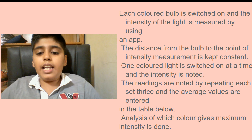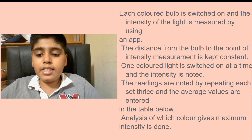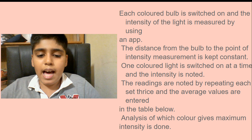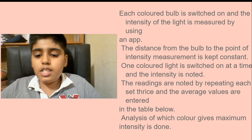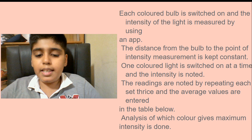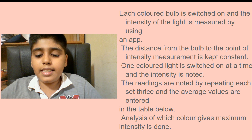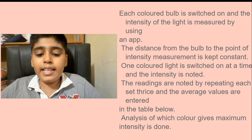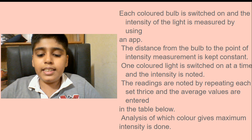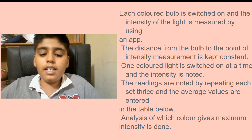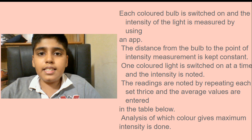Each colored bulb is switched on and the intensity of the light is measured using an app. The distance from the bulb to the point of intensity measurement is kept constant. One colored light is switched on at a time and the intensity is noted. Readings are taken by repeating each set three times and the average values are entered in the table. Analysis of which colors give the maximum intensity is done.